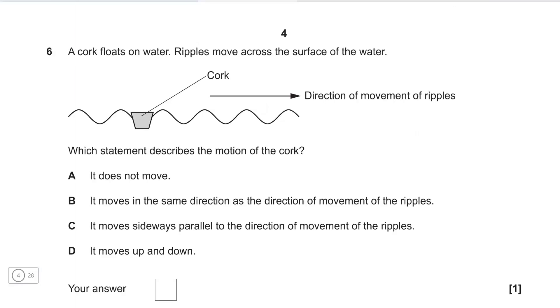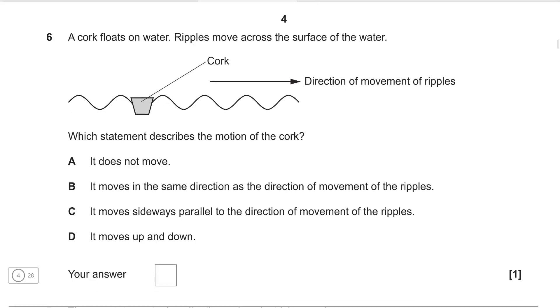A cork floats on water and ripples move across the surface of the water and which statement describes the motion of this thing? So A does not move. Well that's got to be wrong. It moves in the same direction as the direction of the movement of the ripples. Well they're going to the side but this here is a water wave which is a transverse wave. So that's not true. It moves sideways. That's also not true.